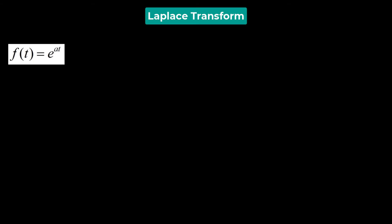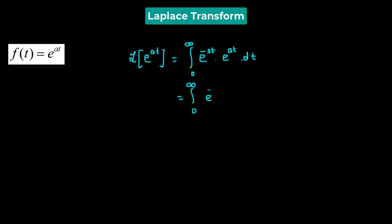In this particular section, we have to determine the Laplace transform of the exponential function e raised to the power of at. That is given by the improper integral from 0 to infinity of e raised to the power of negative st times e raised to the power of at, which is our function f of t, times dt. So that gives us the integral from 0 to infinity of e raised to the power of negative st plus at, dt.